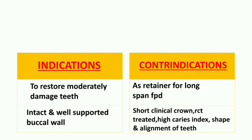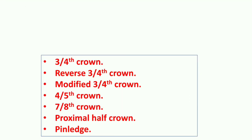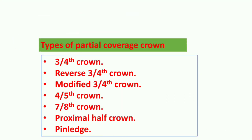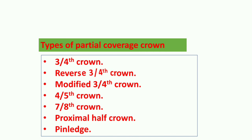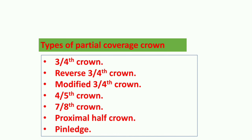The types of partial coverage crowns are named depending on the area covered: three-quarter crown, diverse three-quarter crown, modified three-quarter crown, four-fifth crown, seven-eighth crown, proximal half crown, and pin ledge. These terms may seem confusing but are quite interesting. We will learn about these partial coverage crown types in detail in the next part.